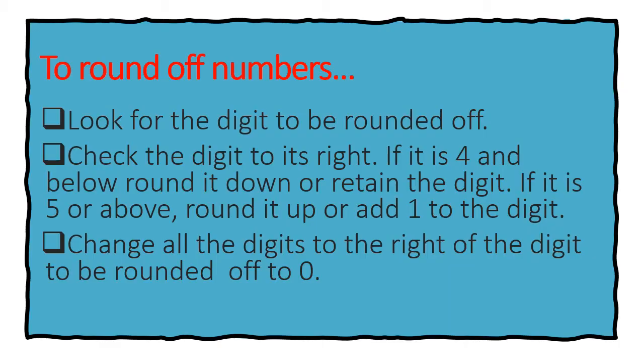To round off numbers, we simply follow these rules. First, look for the digit to be rounded off. Second, check the digit to its right.